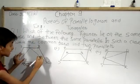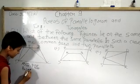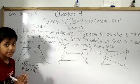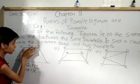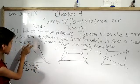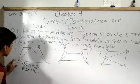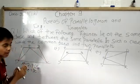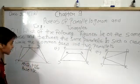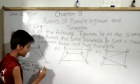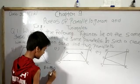The common base in this figure is DC. Now we have to tell whether they lie between the same parallels. For triangle PDC, all its points — point P, point D, and point C — should touch the parallels of parallelogram ABCD. The parallels of ABCD are AB and DC. Point P is touching AB, and points D and C are touching DC itself. So yes, they lie between the same parallels. The two parallels are AB and DC.